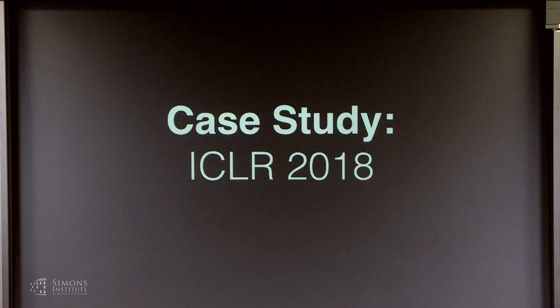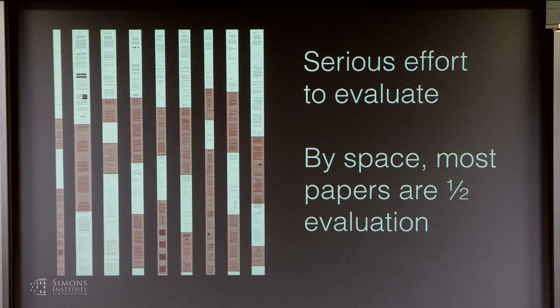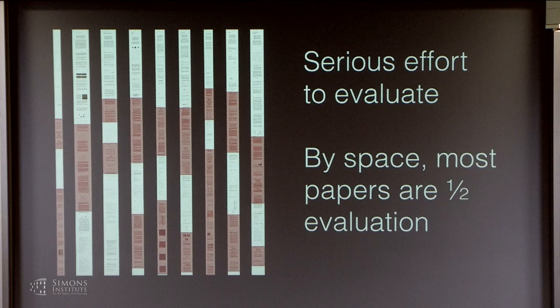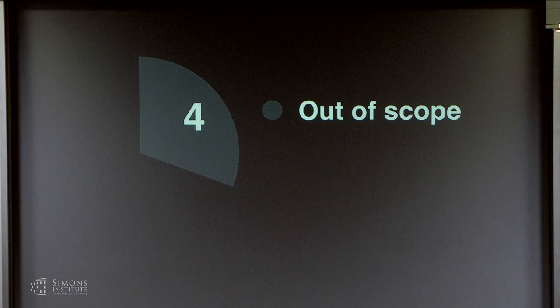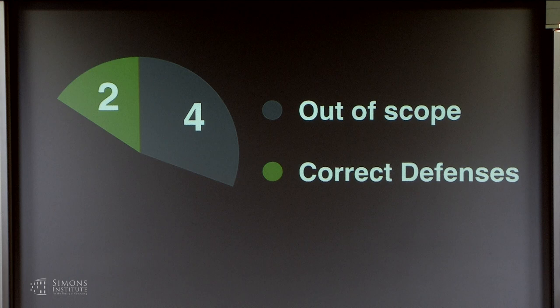Let me give a case study from ICLR 2018. Most of these papers had very long evaluation sections — roughly half the paper was evaluation. These were papers from reputable places, and people were trying hard. We re-evaluated all defenses accepted at ICLR that year. We put four out of scope — either certified, or not claiming white-box robustness. Of the remaining ones, two were correct and seven were broken.